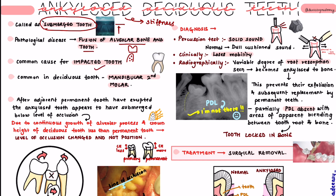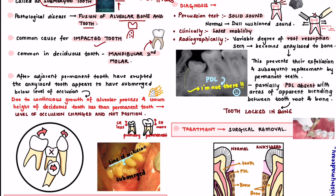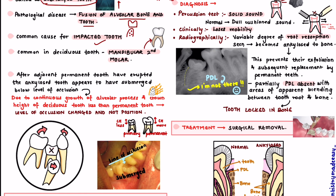This is the most common cause for an impacted tooth. The most commonly seen ankylosed deciduous tooth is the mandibular second molar. When your permanent adjacent teeth — in this case the molar and the premolar — are erupting, the ankylosed tooth appears submerged. As you can see in this picture, it is below the level of occlusion. Because it is fused with the bone, it will obviously be below the occlusal level, which is why it is called a submerged tooth.